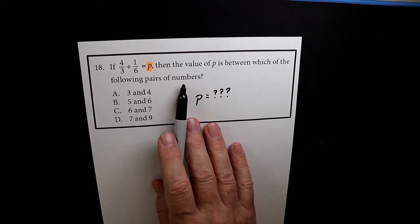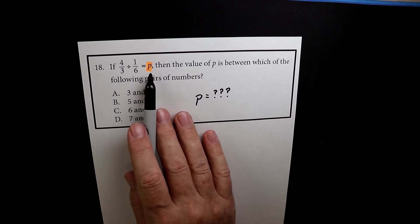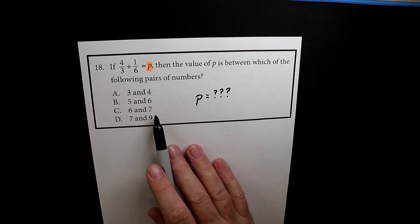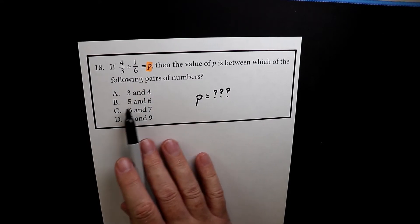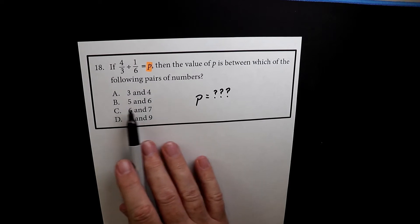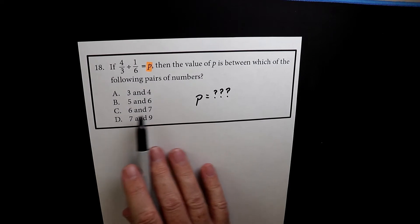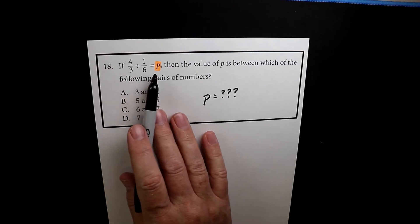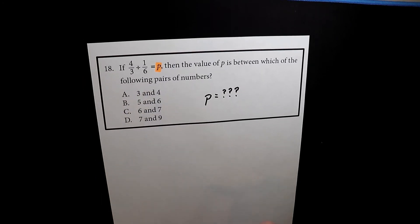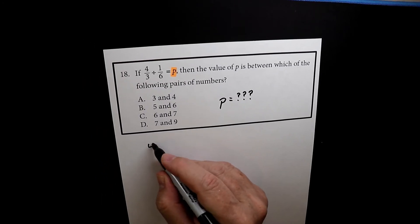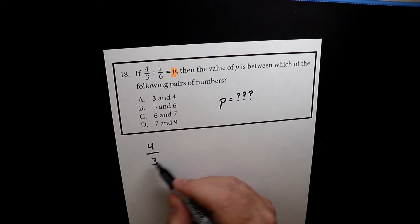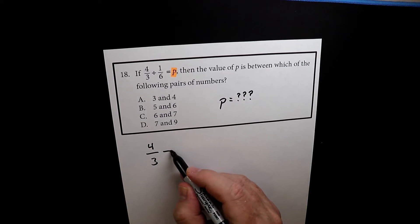They're asking you to find out what the mystery is — what P equals — and which range of numbers it fits in. Does it fit between 3 and 4, 5 and 6, 6 and 7, or 7 and 9? So let's figure out what P equals. When you divide fractions, this is how you start.